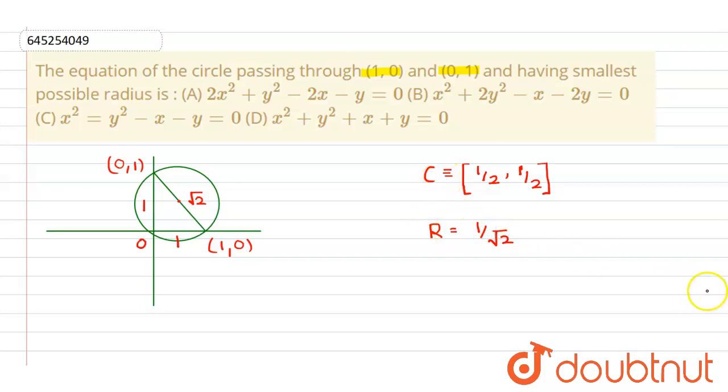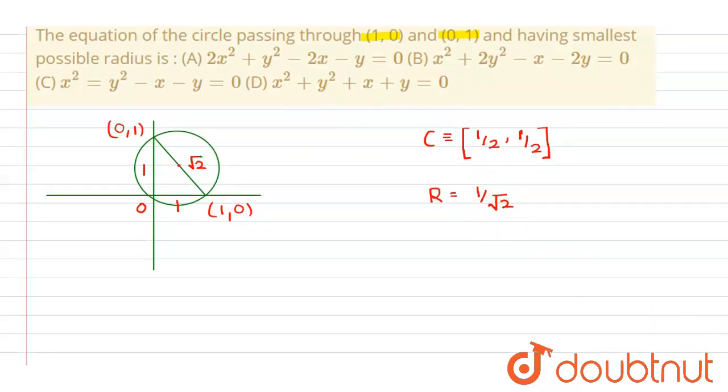Now we have center of circle and we have radius of circle, so we can find the equation of circle. Let me write the general equation first. Equation of circle will be (x - h)² + (y - k)² = r². This is our required equation.